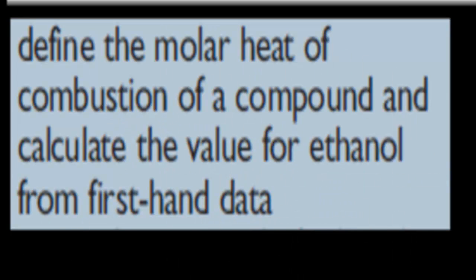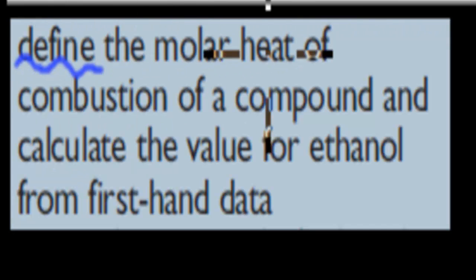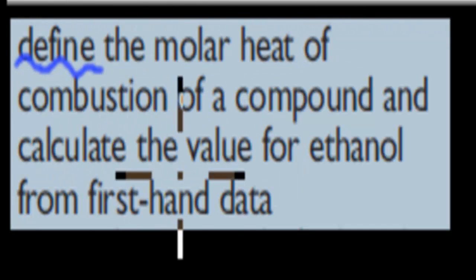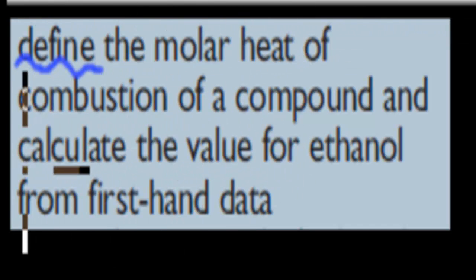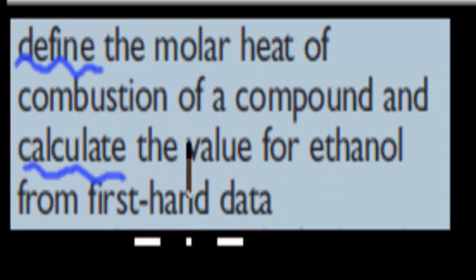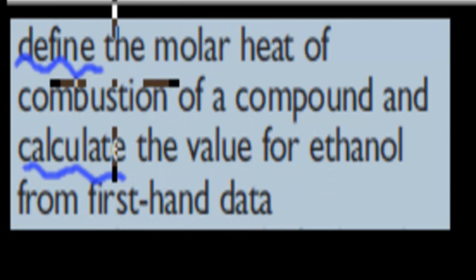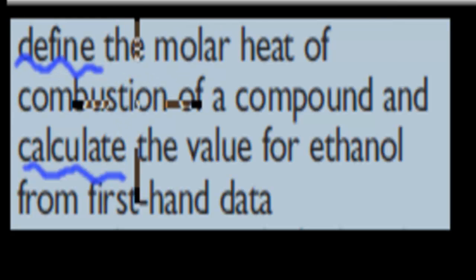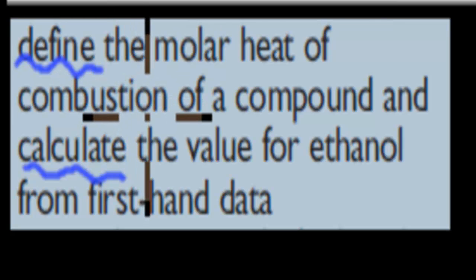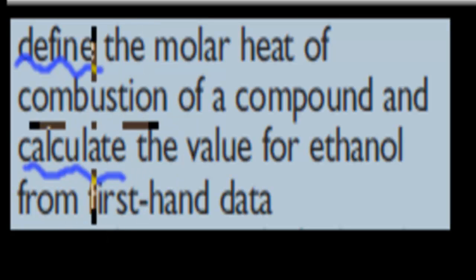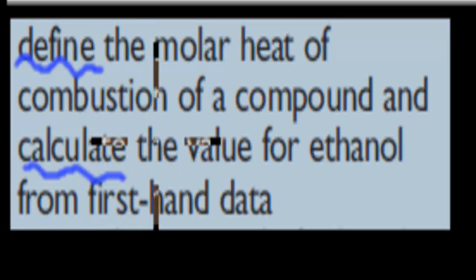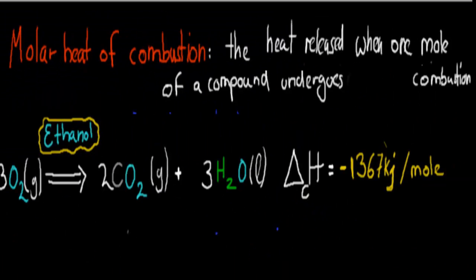There are two parts to this dot point. It says: define the molar heat of combustion, and calculate the value for ethanol from first-hand data. I'm going to show you the definition and then take you through an animation to help make sense of that definition, and then a quick calculation at the end. Let's start with the actual definition.